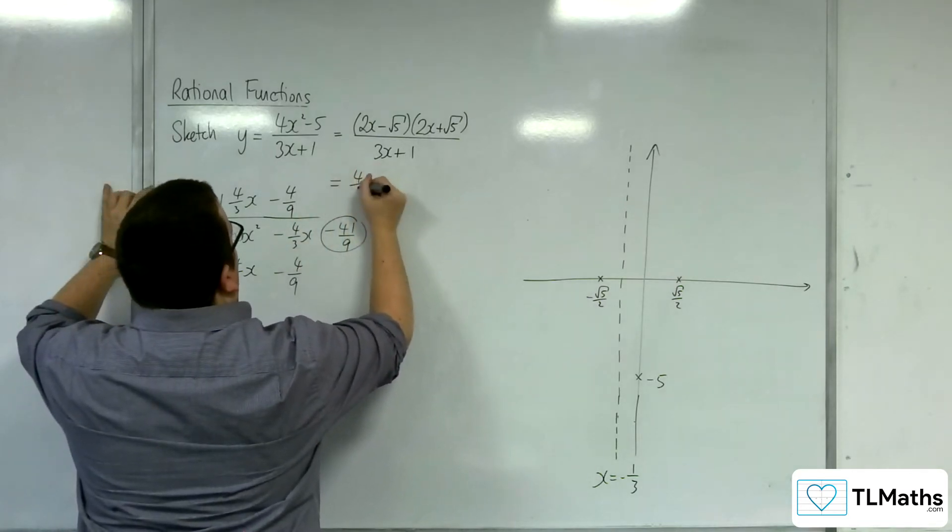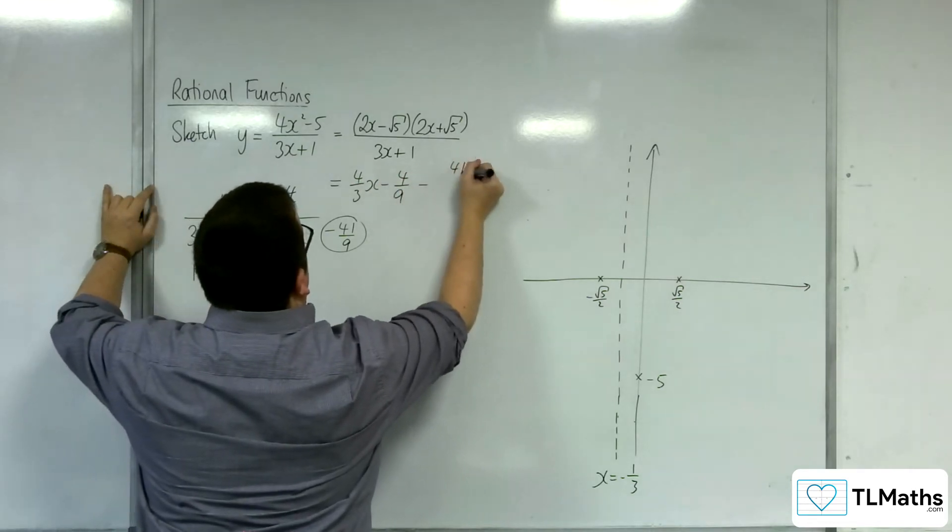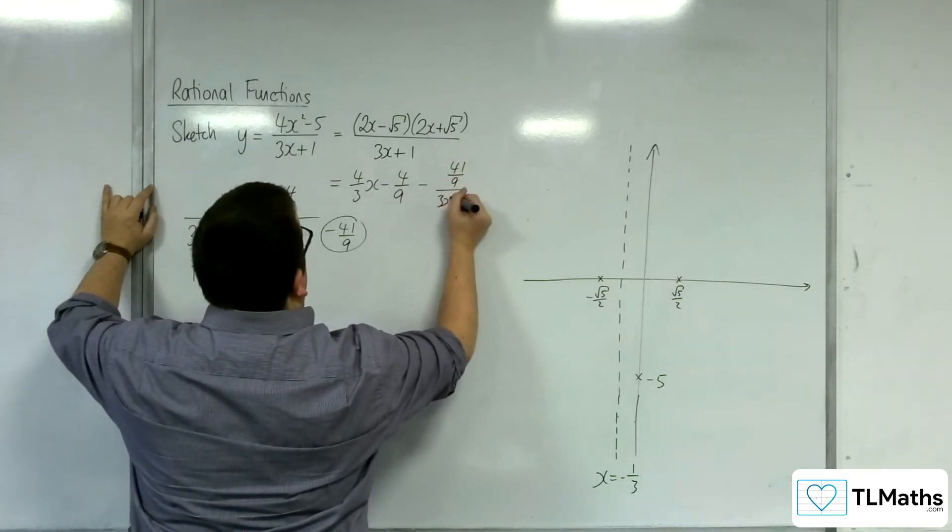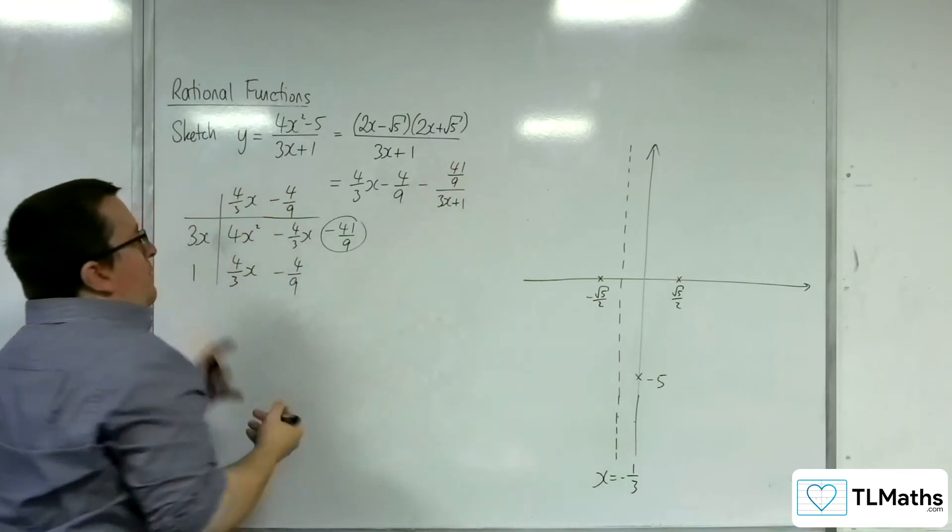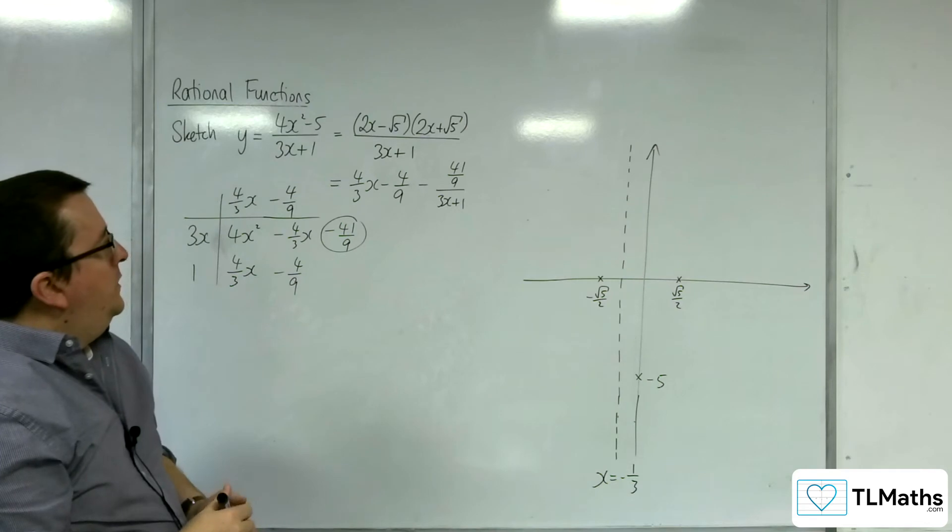So this is equal to 4 thirds x, take away 4 ninths, take away 41 over 9 over 3x plus 1. Now I know that that can be simplified, but I don't need it at this point.